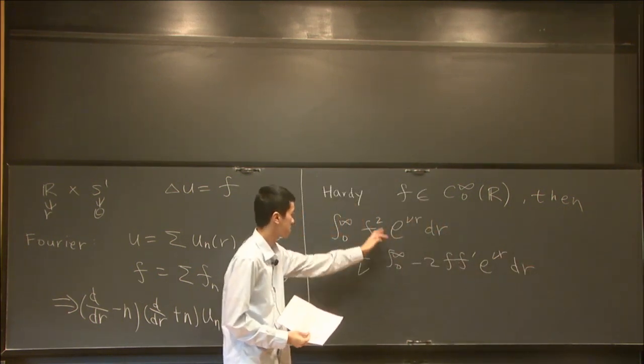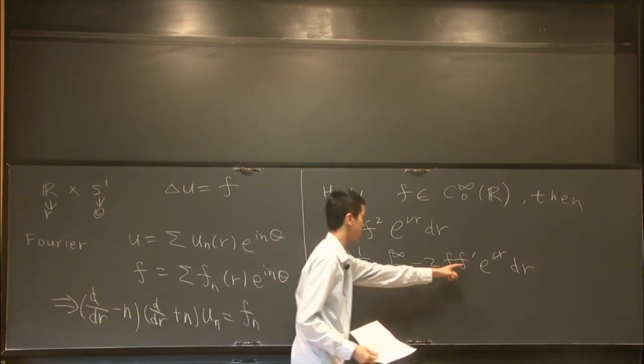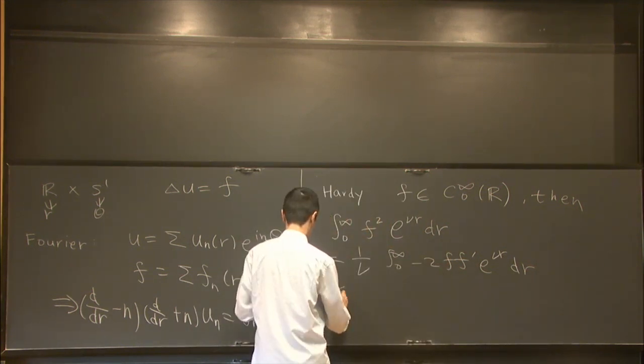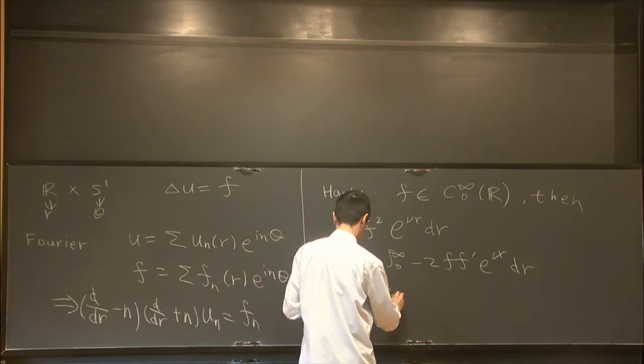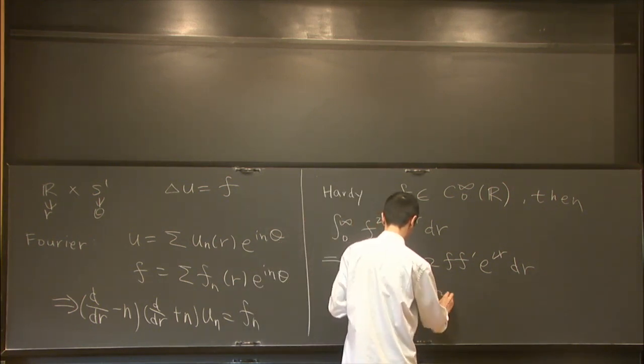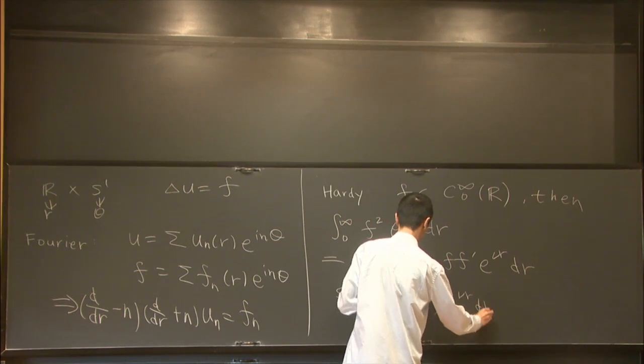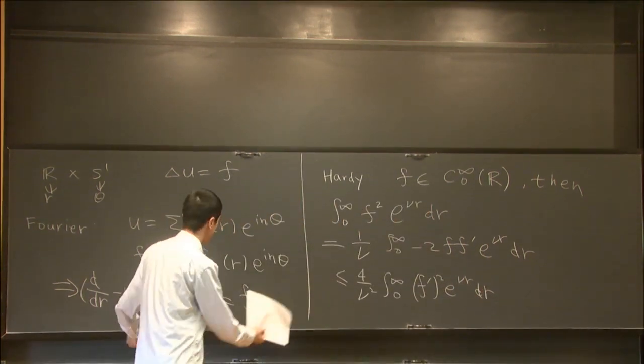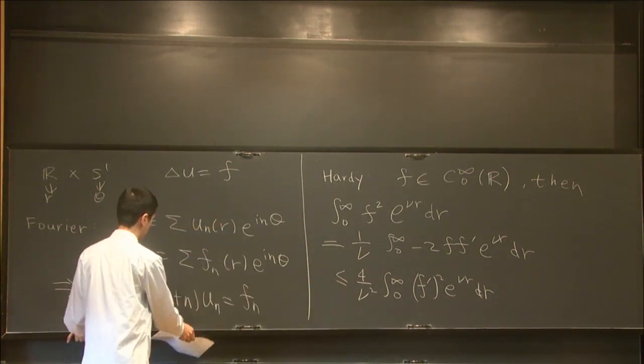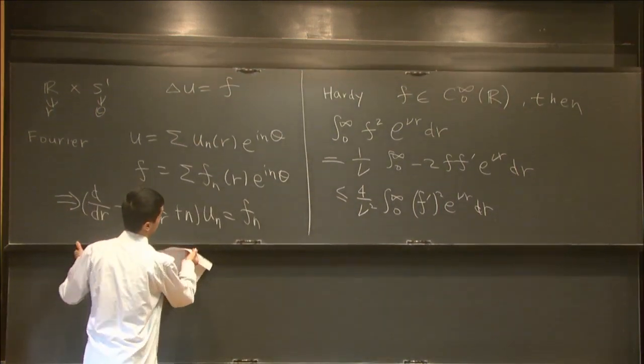And then, using the Cauchy-Schwarz inequality, you can show that this is smaller than 4 over ν squared integral (F')^2 e^{νr} dr. And then, we apply this inequality back to here. Then we get the required estimate.